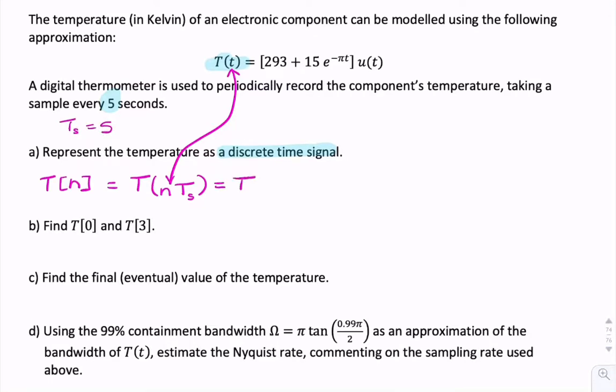So what we're doing is we're rewriting our function, replacing lowercase t with n times 5, or just 5n. So it'll look like this: 293 plus 15e to the minus pi, then 5n. And then that's multiplied by unit step of 5n.